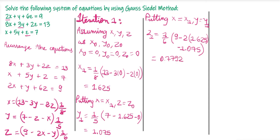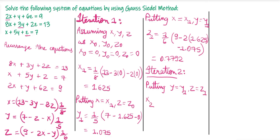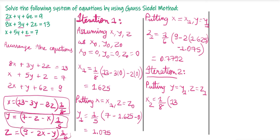Now we go to iteration 2. We put y = y1 = 1.075 and z = z1 = 0.7792 to find x2 = (1/8)(13 - 3×1.075 - 2×0.7792) = 1.0271. Then substituting x = x2 = 1.0271 and z = z1 = 0.7792, we find y2 = (1/5)(7 - 1.0271 - 0.7792) = 1.0387.